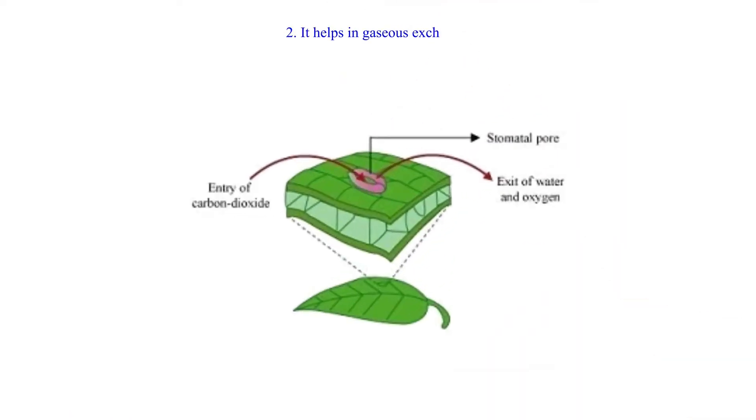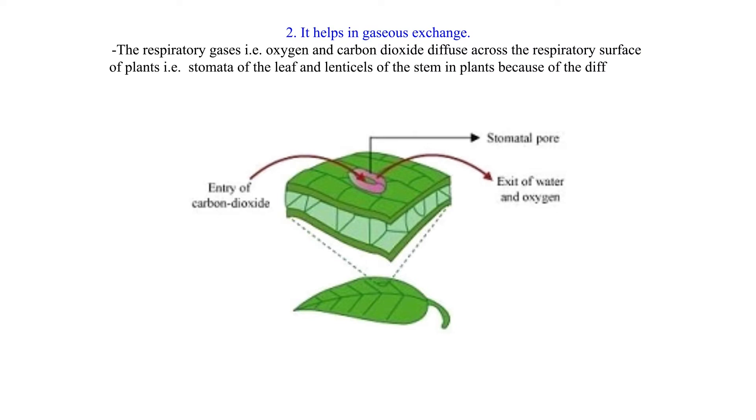2. It helps in gaseous exchange. The respiratory gases, oxygen and carbon dioxide, diffuse across the respiratory surface of plants, the stomata of the leaf and lenticels of the stem in plants, because of the difference in the concentration gradient.